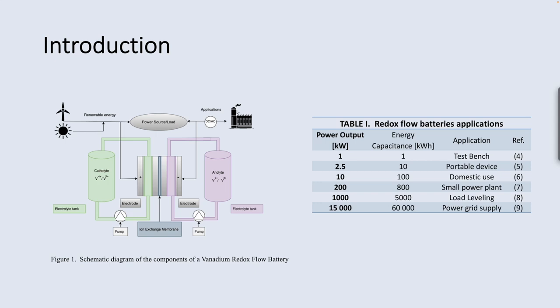The oxidation reaction at the anode electrode causes the vanadium 2+ ions to be oxidized to vanadium 3+, releasing electrons in the process. These electrons flow through an external circuit to the cathode electrode, where they are used to reduce the vanadium 5+ ions to vanadium 4+. The reduced vanadium ions in the cathode flow back to the tank, while the oxidized vanadium ions in the anode flow to the cathode through the ion exchange membrane.